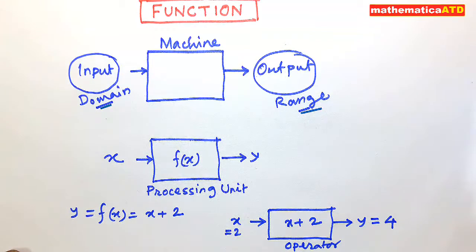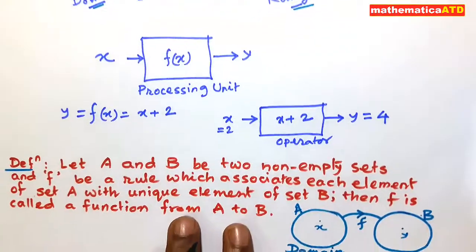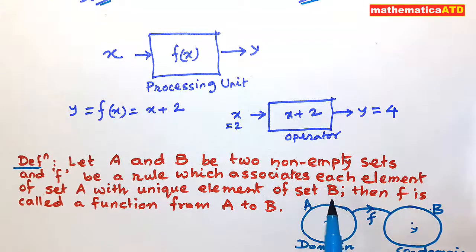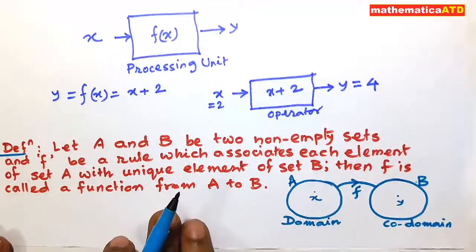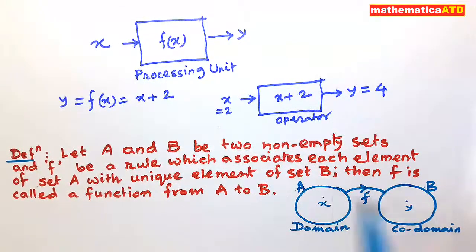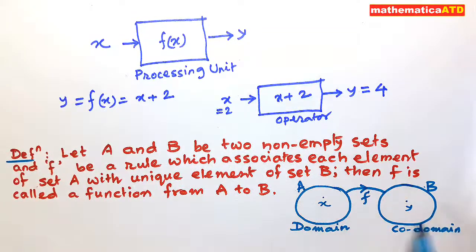Now, what is the definition of a function? Let A and B be two non-empty sets, and let F be the rule which associates each element of set A with a unique element of set B. Then F is called the function from A to B. Here, A is called the domain of F, F is the correspondence from A to B, and B is called the co-domain of F. The set of elements of B which are the images of elements of set A is called the range of F.